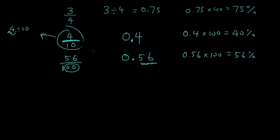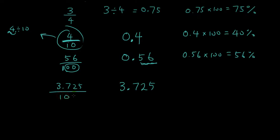So let's give you guys another one — let's do 3.725. How many numbers are there after the decimal point? 3 numbers. So you're going to write 3725 divided by 1000 as the fraction. And then for the percentage, you do 3.725 times 100, which gives you 372.5%.